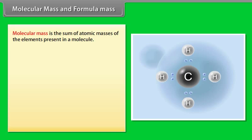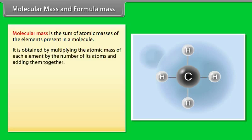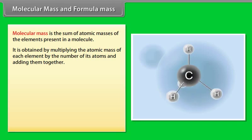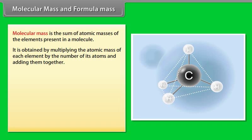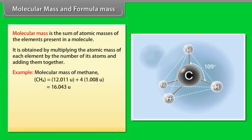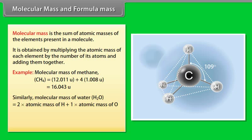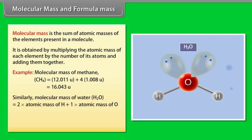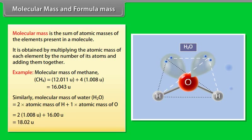Molecular Mass and Formula Mass. Molecular mass is the sum of atomic masses of the elements present in a molecule, obtained by multiplying the atomic mass of each element by the number of its atoms and adding them together. For example, the molecular mass of methane (CH₄) = 12.011U + (4 × 1.008U) = 16.043U. The molecular mass of water (H₂O) = (2 × 1.008U) + 16.00U = 18.02U.